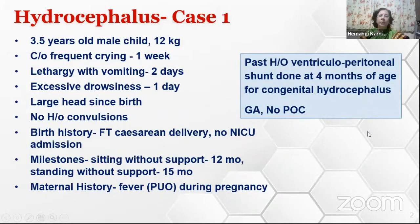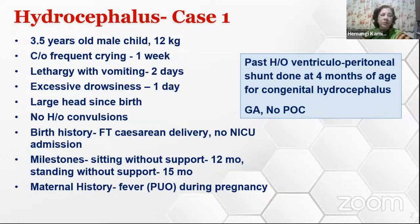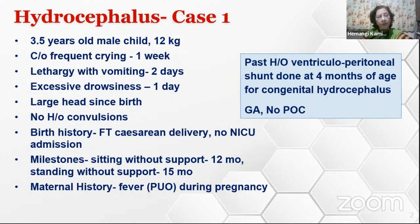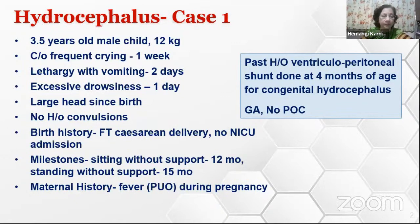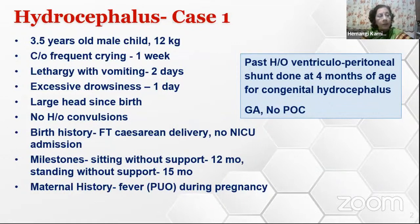Let me first create the scenario so that we can understand better. Our first case is a three-and-a-half-year-old male child weighing 12 kg. His parents brought him with complaints of frequent crying since one week, lethargy with vomiting for two days, and excessive drowsiness for one day. Since birth he had a large head, no history of convulsions. The parents also gave history of a ventriculoperitoneal shunt done at four months of age for congenital hydrocephalus under general anesthesia with no perioperative complications. He was delivered by full-term caesarean and achieved milestones slightly later—sitting without support at 12 months and standing without support at 15 months.